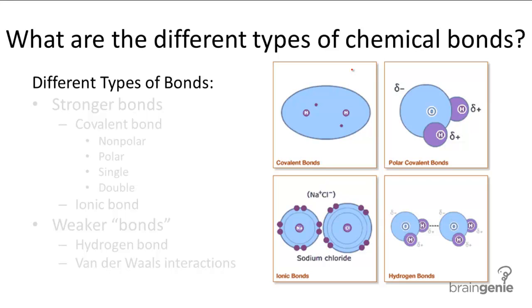The different types of chemical bonds can mainly be divided by their strengths. Covalent and ionic bonds are relatively strong, and hydrogen bonds and van der Waals interactions are relatively weak.